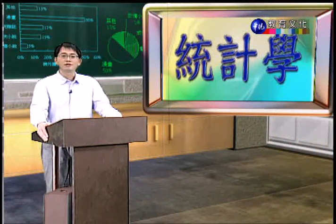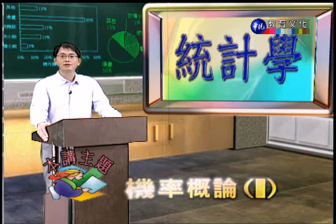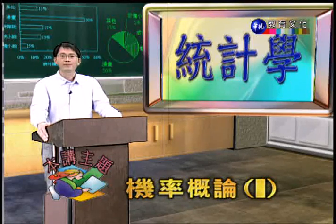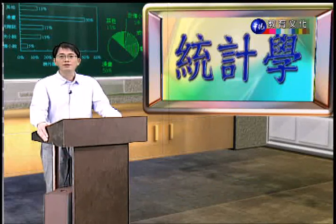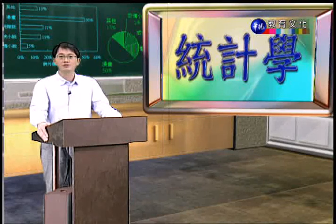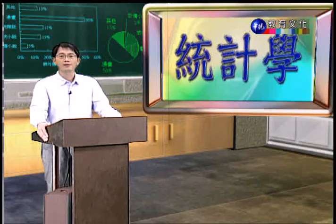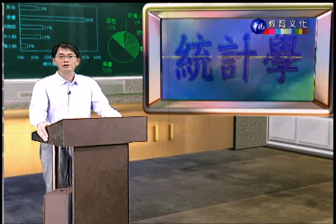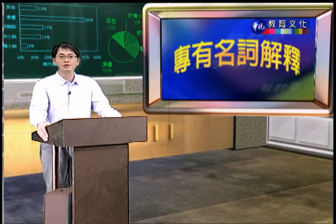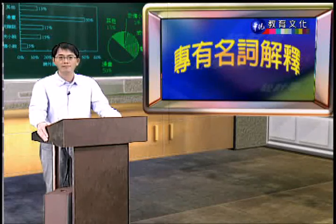各位同學大家好，今天統計學第五講，我們要談的主題是機率概論一的部分。機率主要的目的是用來衡量某一個事件可能發生程度的大小，我們通常會利用一個量化的數值來賦予它，代表它發生可能性的高低。在正式介紹機率論的內容之前，有一些機率論上常見的專有名詞，我們必須先做介紹。